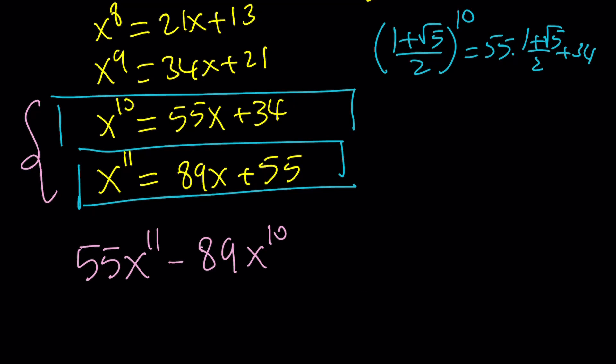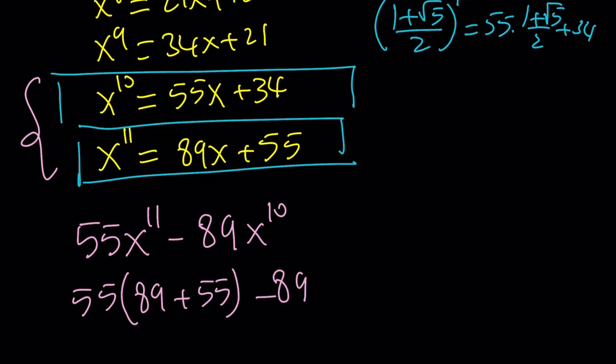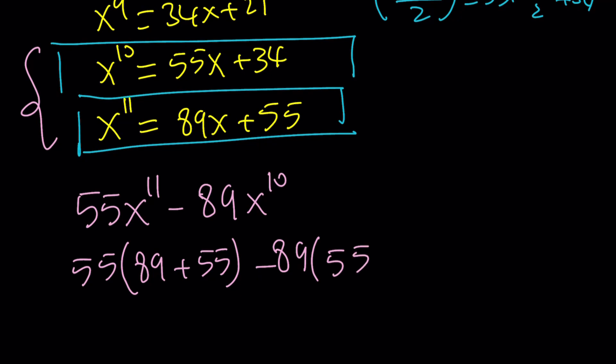Let's replace x to the eleventh with 89x plus 55, and the 89 times x to the 10 will be replaced with 55x plus 34. Now, one good thing about doing this is that there's an x here. These two terms are opposites. Look at the plus minus signs. So when they're added, they're going to disappear. But let's still write it.